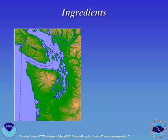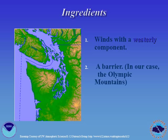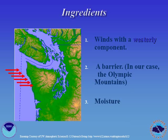In order for a Convergence Zone event to occur, a few ingredients are required. Winds need a westerly component in order to encounter a barrier, and plenty of moisture must be present. Meteorologists like to define winds by the direction that they are coming from, because we like to know where we're getting our weather. These winds, represented by red arrows, are coming from the west towards the east, so they are called westerly winds.